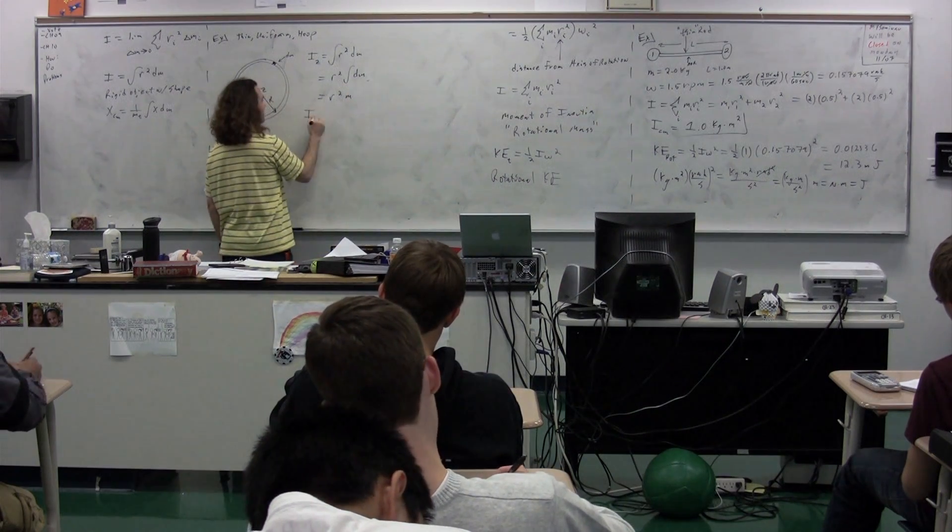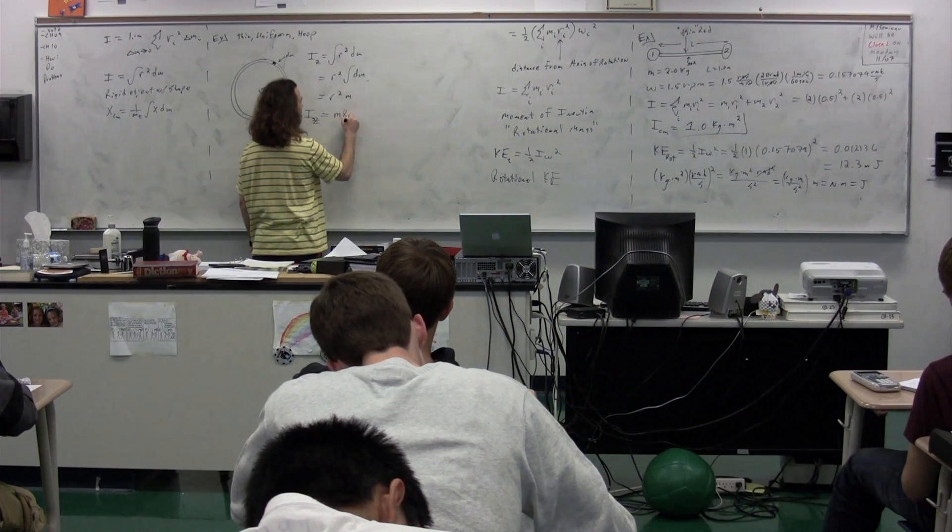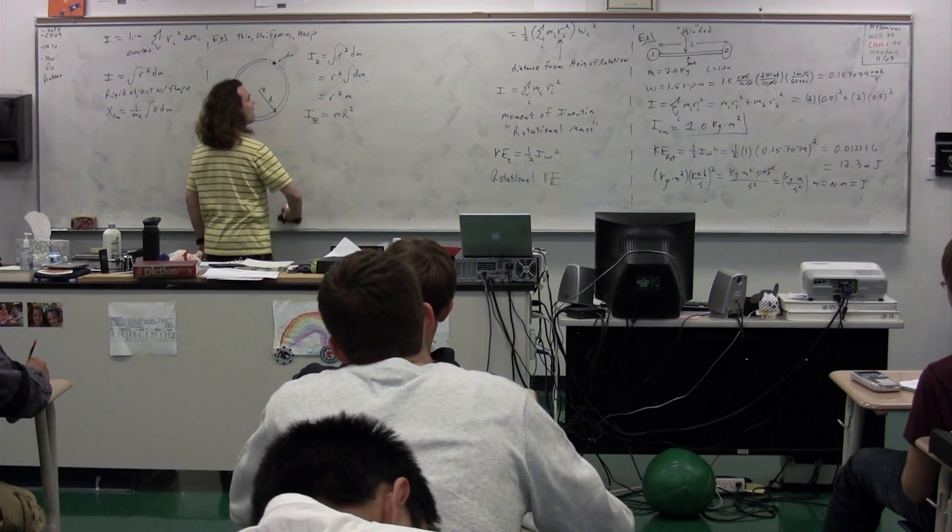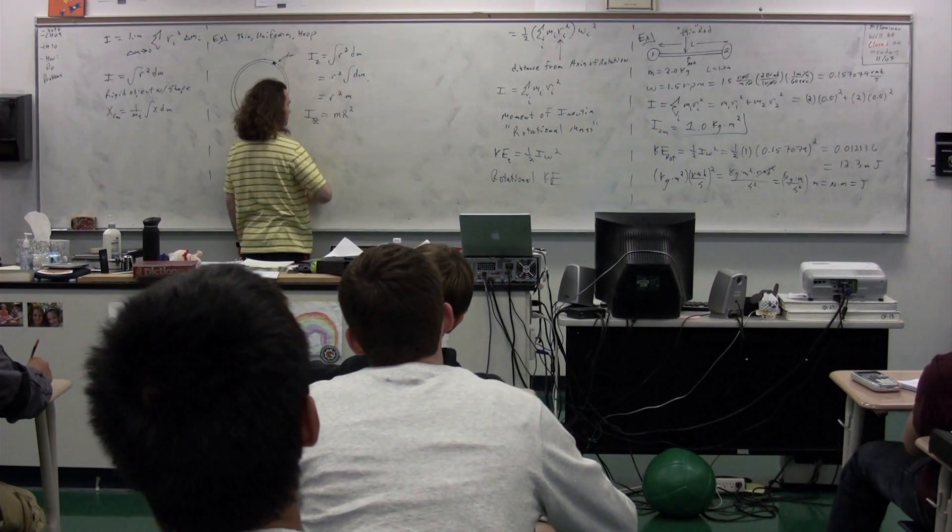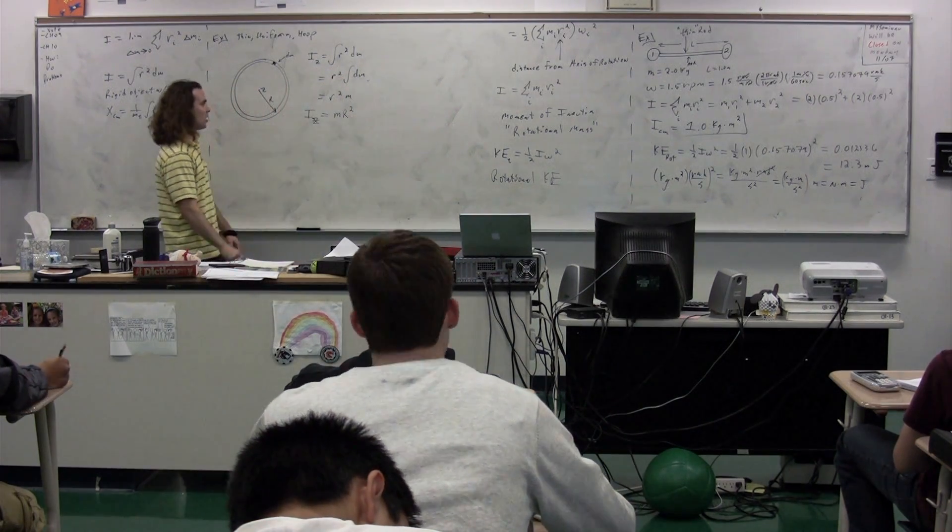So the moment of inertia about the z-axis is just equal to m times r squared where r is the radius of the hoop. So I just substituted in r for the radius of the hoop.